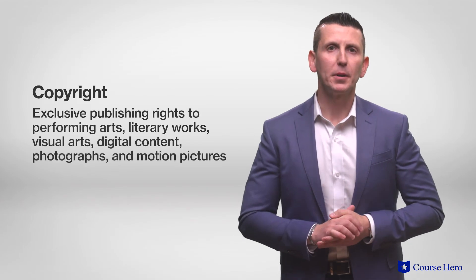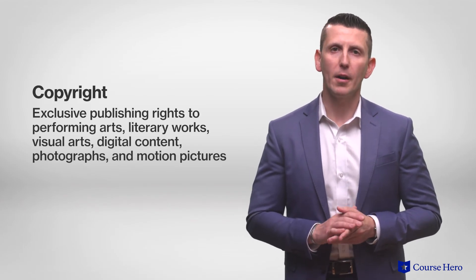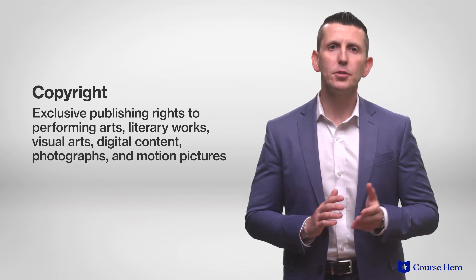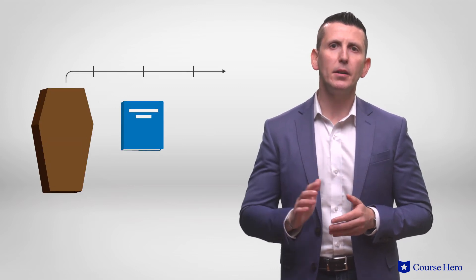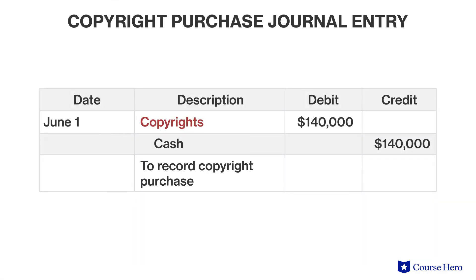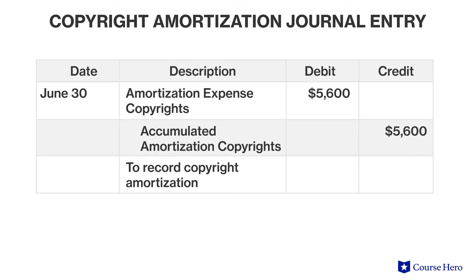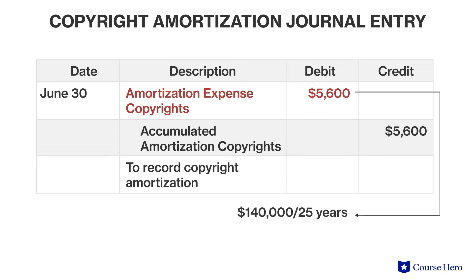A copyright provides exclusive publishing rights to performing arts, literary works, visual arts, digital content, photographs, and motion pictures. A copyright has a useful life that can extend up to 70 years beyond the death of the author of the work. Suppose that Hollywood Movies purchased a copyright for $140,000. When the copyright is first acquired, it is recorded at its initial cost. Suppose further that this particular copyright has a useful life of 25 years. Each year, the company will record an amortization expense of $5,600, which is $140,000 divided by 25.